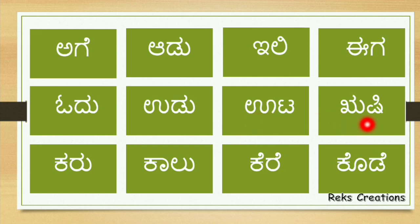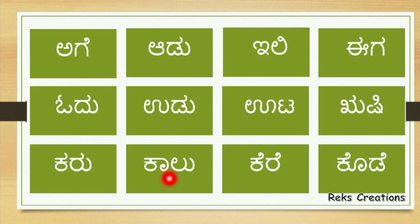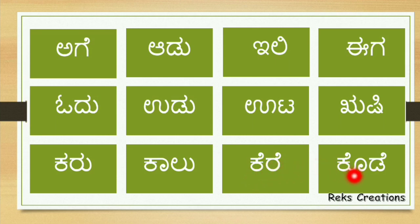R-u-shi, r-shi. Karu, karu. Ka-lu, ka-lu. Ka-lu, ke-re, ke-re. Ko-de, ko-de.